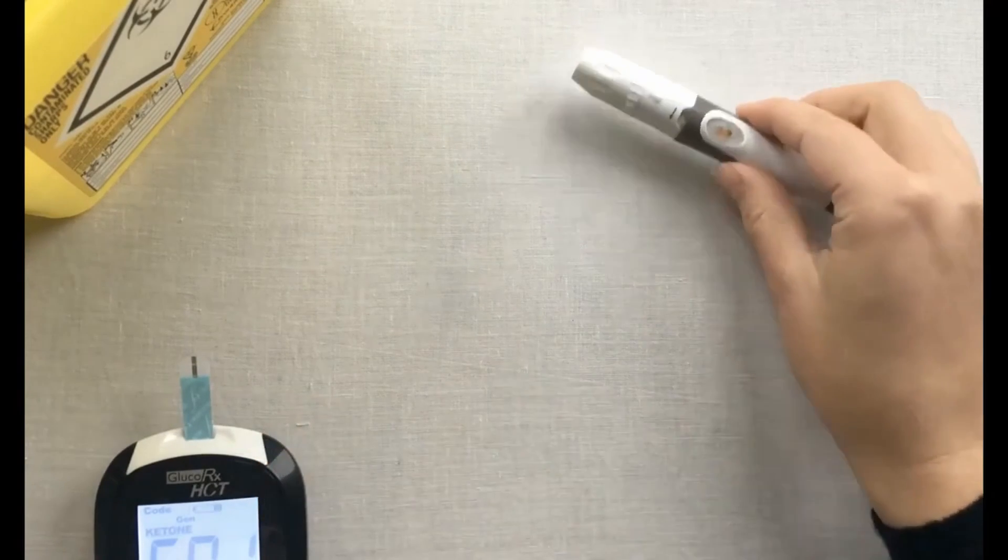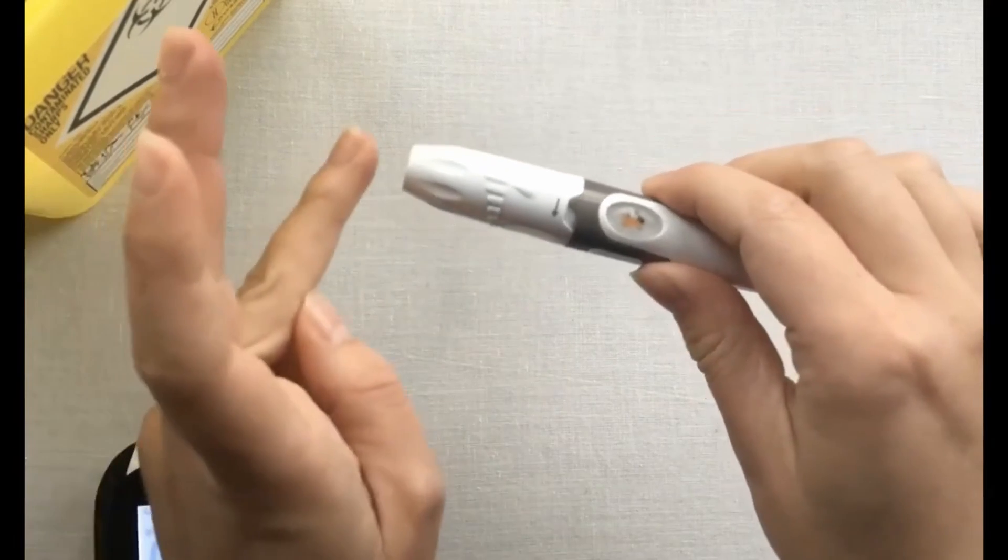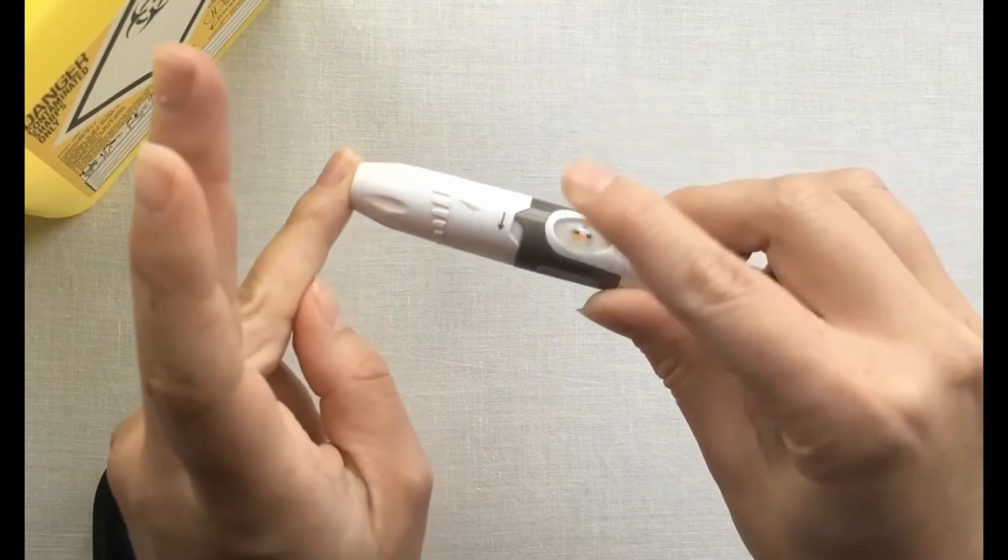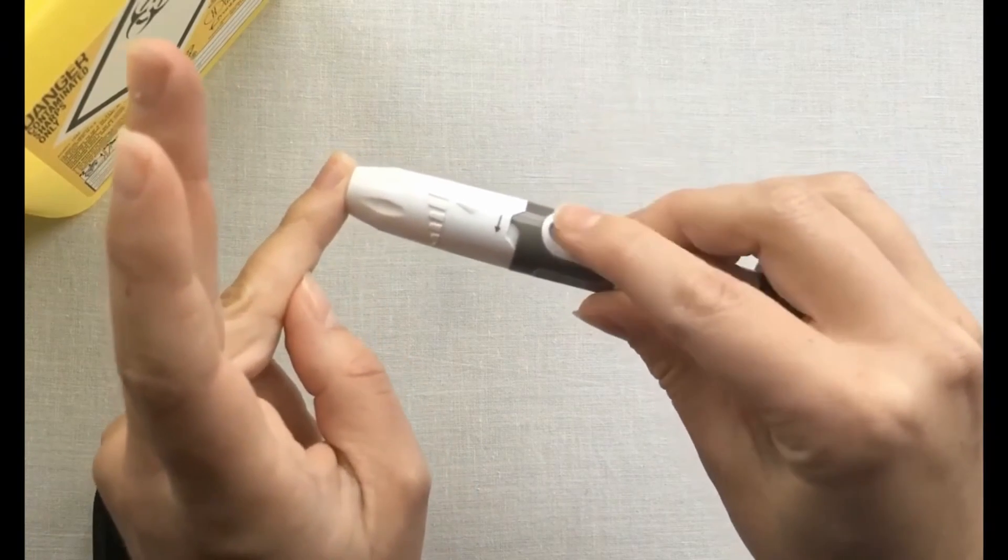Please set your meter down. Take your preset lancing device and hold it firmly against the puncture site. Apply pressure to the orange trigger button.